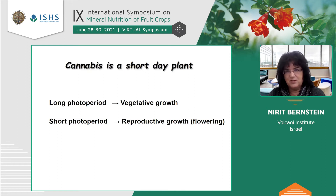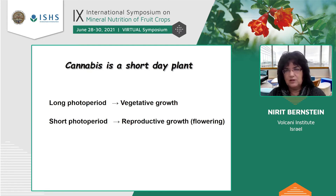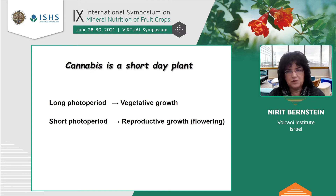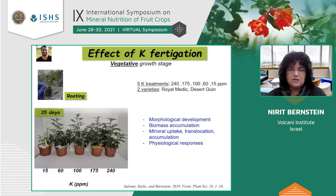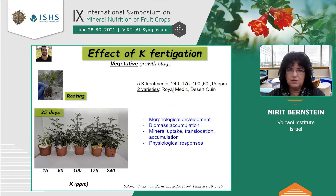Today I'm going to show you some results from six experiments we conducted — two for nitrogen, two for phosphorus, and two for potassium. Why two? Because cannabis is a short-day plant, meaning that under exposure to a long photoperiod it only grows vegetatively. It has to be switched to a short photoperiod to produce inflorescences, which are the reproductive yield in cannabis. The first experiment was conducted by Avya Sloan, a master's student in the lab, and we checked five concentrations — a wide range of potassium from 15 all the way to 230 ppm — in two varieties of commercial cannabis.